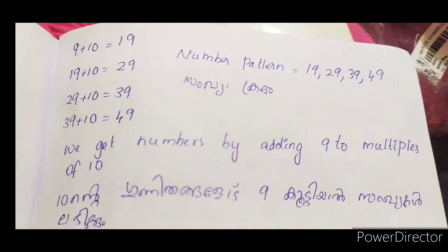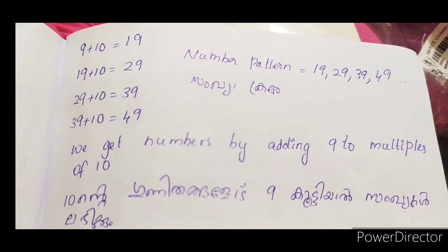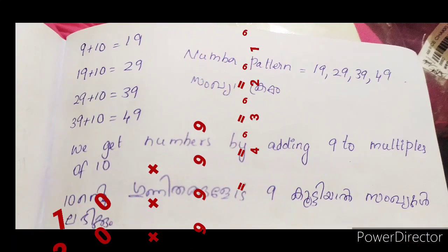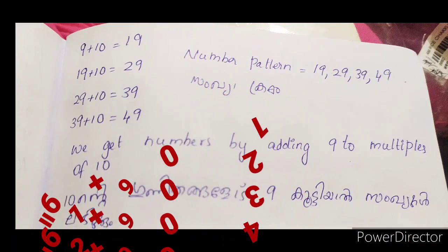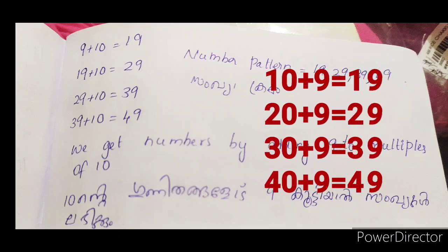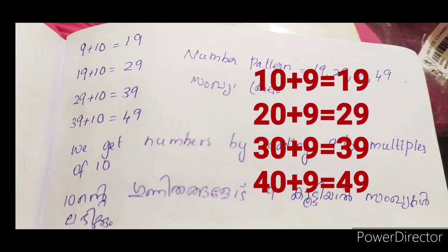We get the numbers by adding 9 to the multiples of 10. So 10 plus 9 is 19, 20 plus 9 is 29, 30 plus 9 is 39, 40 plus 9 is 49.